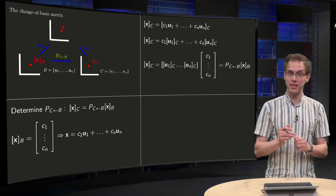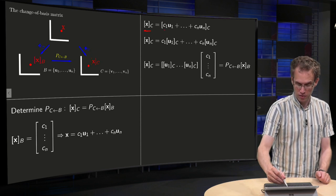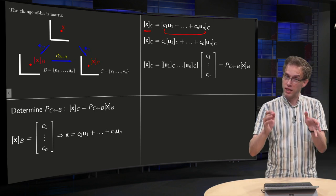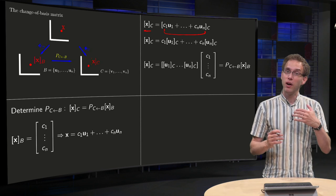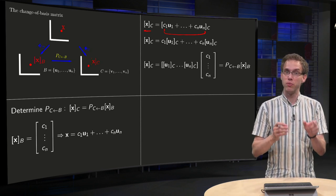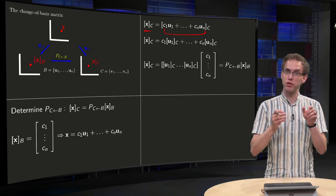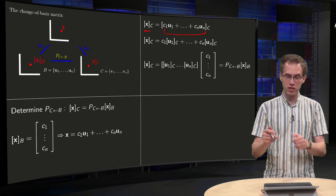And now we compute our x_C, our x with respect to C. Well, we know what x is, that's over here, so this whole expression in the basis C. Now we can use that coordinate mapping is a linear mapping, so c_1 u_1 plus c_2 u_2 etc. in the basis C equals c_1 times u_1 in the basis C, etc.